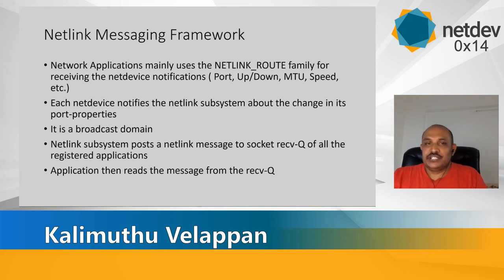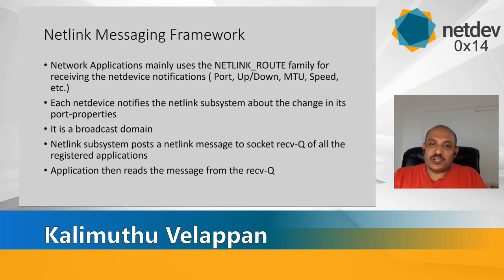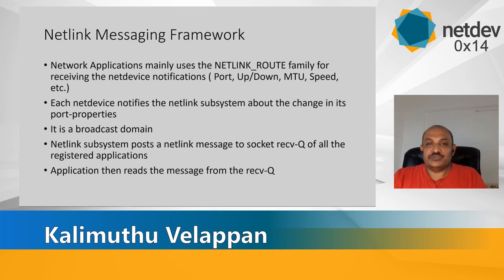In a typical networking world, networking applications mainly use the netlink route family socket for receiving notifications from kernel net devices. Specifically, applications are interested in port up/down status, MTU, speed changes, etc. Any changes in net device properties should generate a notification to the application via netlink route. Since it's a broadcast domain, any attribute change generates a netlink message, and the netlink subsystem posts that message to all registered applications, which then receive it from the queue and process it.